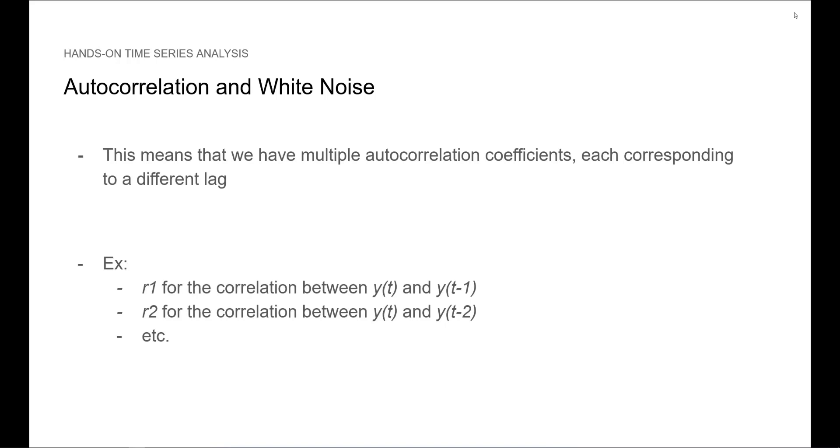This means that we have multiple autocorrelation coefficients, each corresponding to a different lag. For example, r1 would be the autocorrelation coefficient for the correlation between y at time t and y at time t minus 1. R2 would then be for the correlation between y at time t and y at time t minus 2, and so on and so forth.